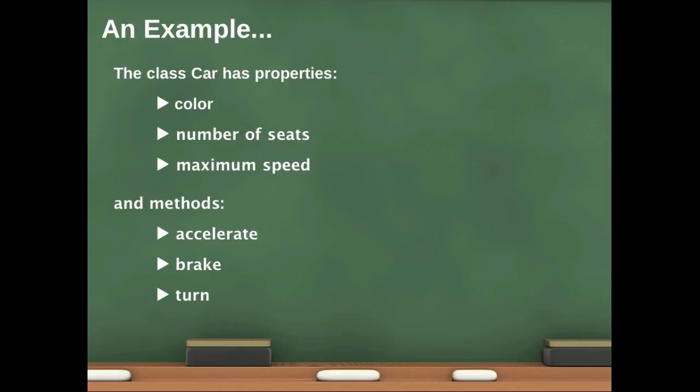So here's an example of a class. We can say that a class named Car, and by the way, by convention our class names all begin with an uppercase letter, and property and method names begin with a lowercase letter and they're in camel case. So we can say that a class named Car would have properties: it has color, number of seats, maximum speed, and so forth. Now these properties aren't defined in the class, but they are declared in the class.